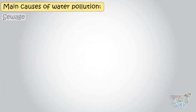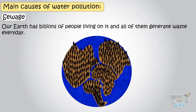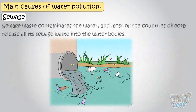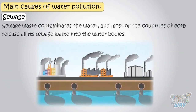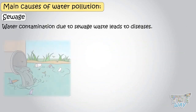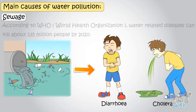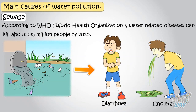Next is sewage. Our Earth has billions of people living on it, and all are generating waste every day. Managing this waste is a very big problem for all of us. Sewage waste is the most difficult to manage. Sewage waste contaminates the water, and most countries directly release all their sewage waste into the water bodies. Water contamination due to sewage waste leads to diseases like diarrhea and cholera. And according to the WHO, that is, the World Health Organization,